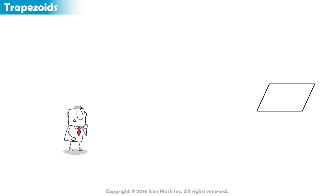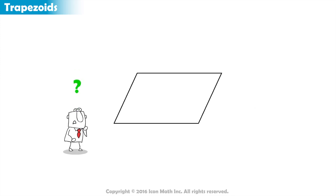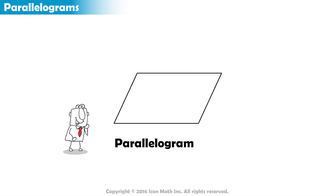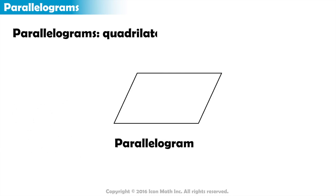Do you know the name we use to describe a quadrilateral with two pairs of parallel sides? We call this shape a parallelogram. Parallelograms are quadrilaterals with two pairs of parallel sides. Both pairs of opposite sides are parallel.